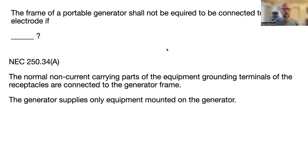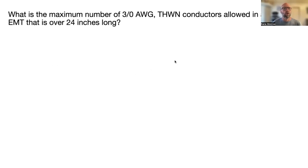Next question: a frame of a portable generator shall not be required to be connected to a grounding electrode if blank. Be careful — we're talking about grounding, which is covered under 250.34(A). The answer is: the non-current-carrying parts of the equipment and grounding terminals of the receptacles are connected to the generator frame, and the generator supplies only equipment mounted on the generator.